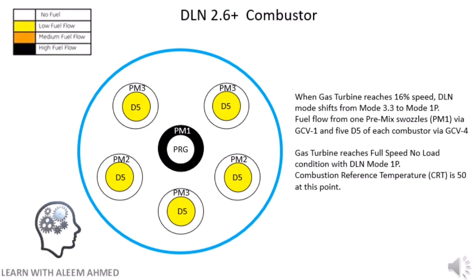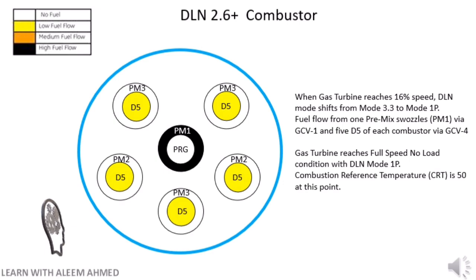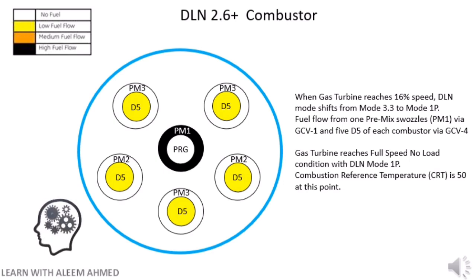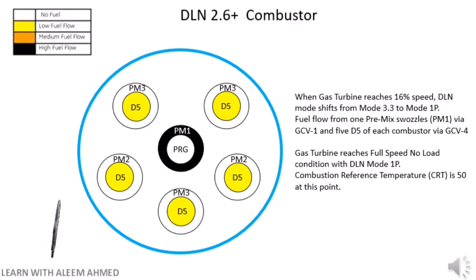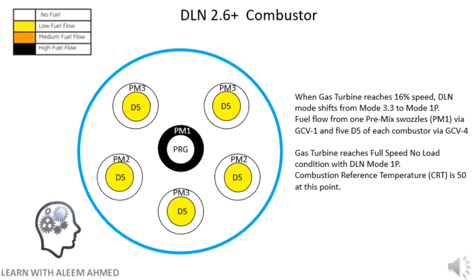When the gas turbine reaches 16% speed, the DLN mode shifts from mode 3.3 to mode 1P. Fuel flows from one premix swazzle PM1 via GCV1 and 5 D5 circuits of each combustor via GCV4. The gas turbine reaches full speed no-load condition with DLN mode 1P. The Combustion Reference Temperature CRT at FSNL will be 50.